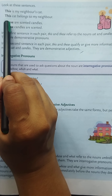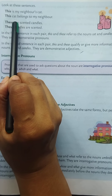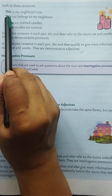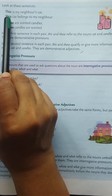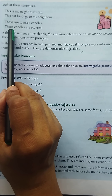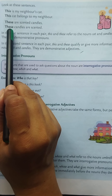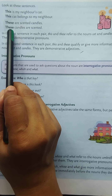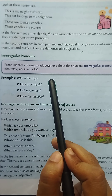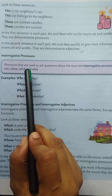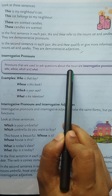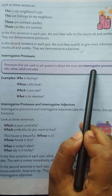So in the first sentence, this is used as a demonstrative pronoun, and in the third sentence, these is used as a demonstrative pronoun. But in the second sentence, this is used as a demonstrative adjective, and in the fourth sentence, these is also used as a demonstrative adjective.